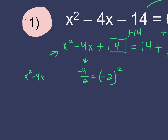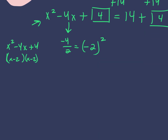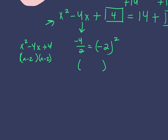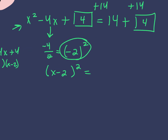If I factor x² minus 4x plus 4 — what times what gives you positive 4 when multiplied but negative 4 when added? x minus 2 and x minus 2. Every time you complete the square, you will create a perfect square trinomial. So what you'll have is your binomial: x minus 2 squared, which equals 14 plus 4 — that's 18. Now we have the problem we did on Friday.